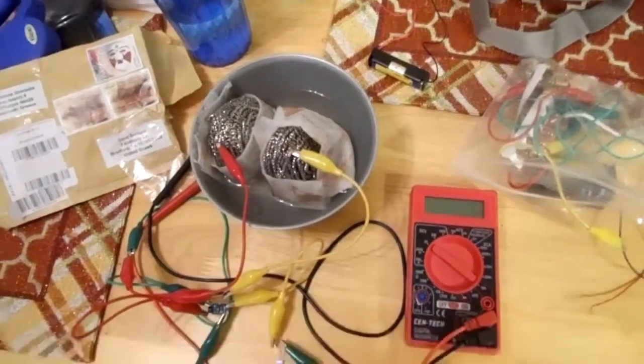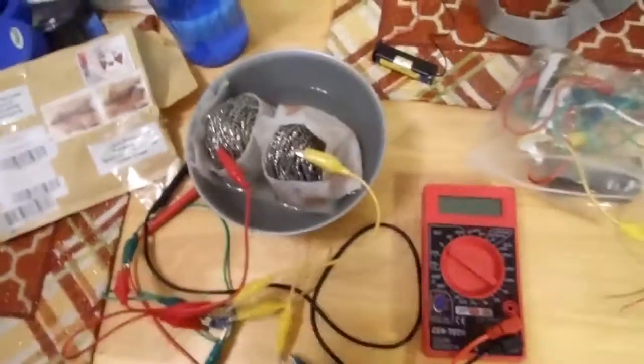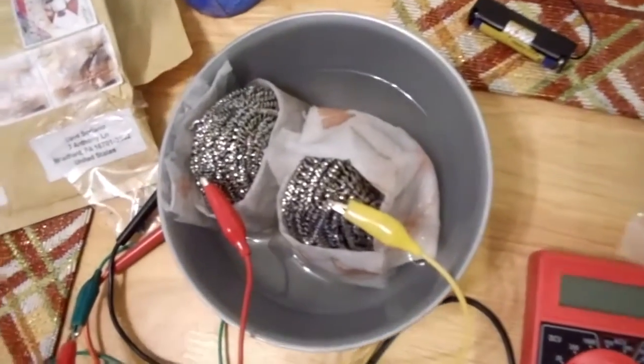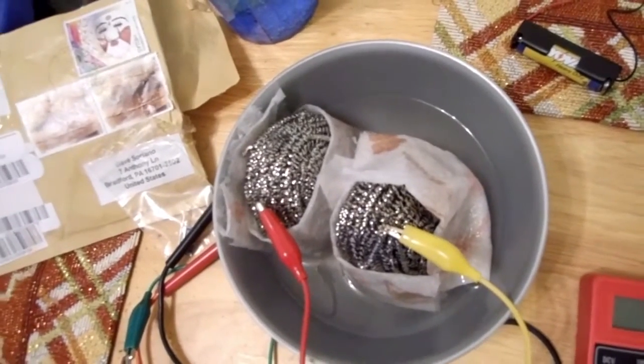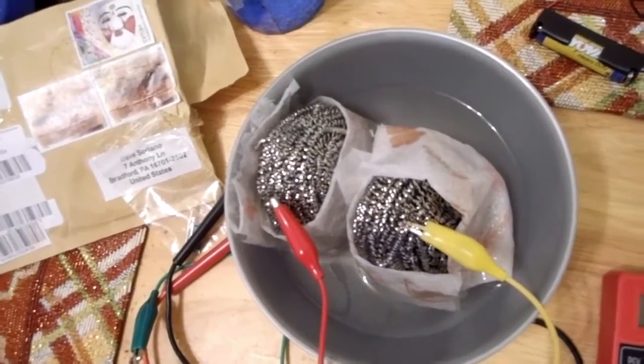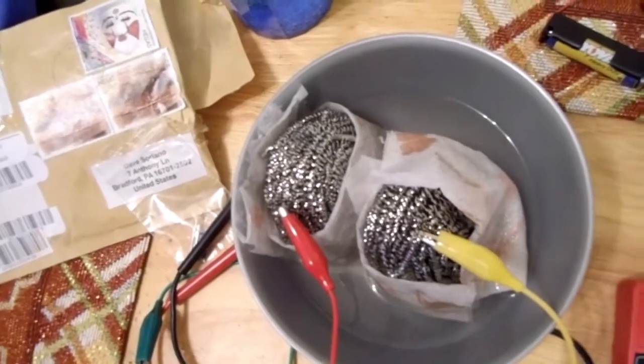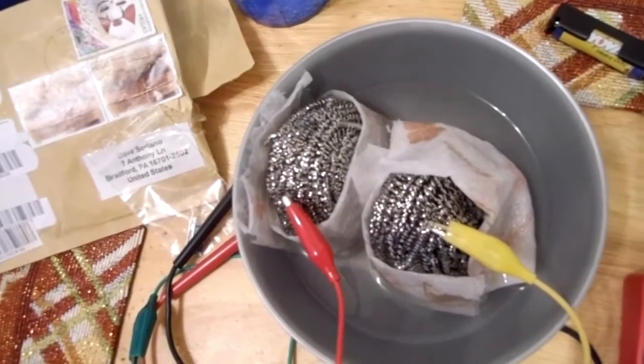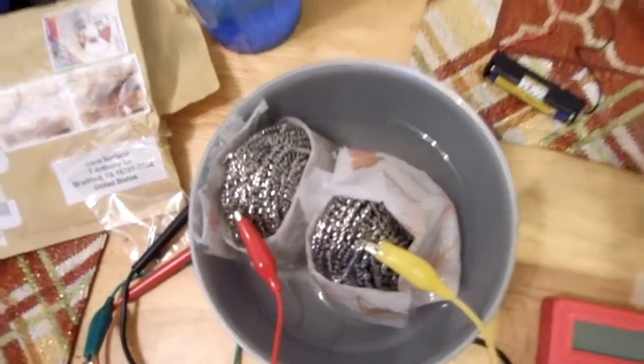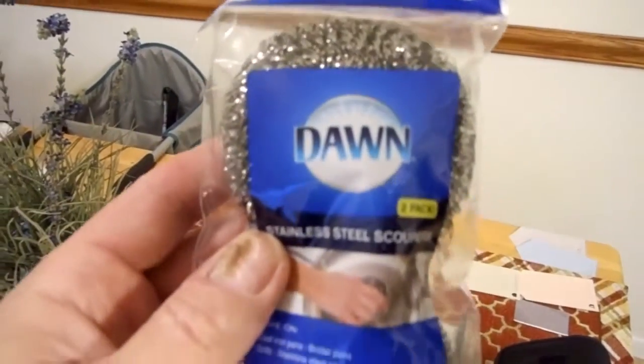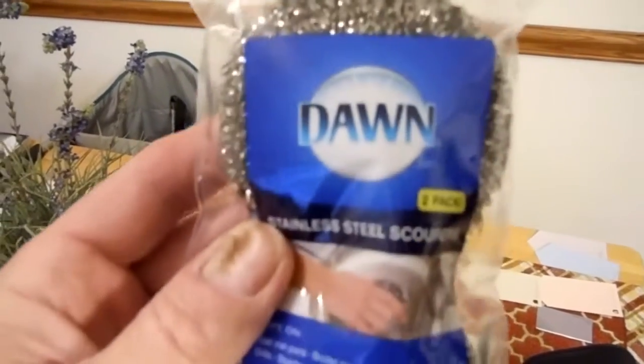Okay, this is a stainless steel battery. It's actually a secondary cell, a rechargeable battery. You go down to the hardware store or grocery store and pick up a couple of stainless steel scrubbers. This is Dawn, I think it was a dollar thirty with tax.